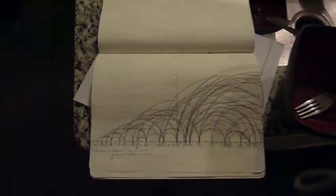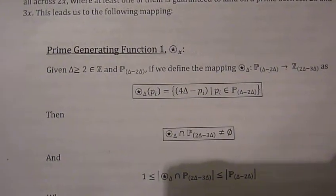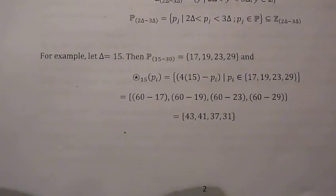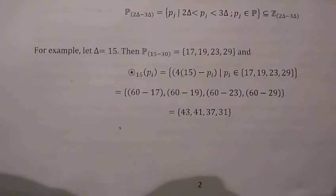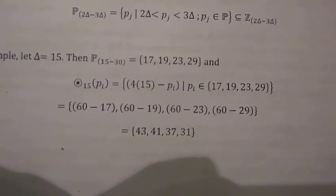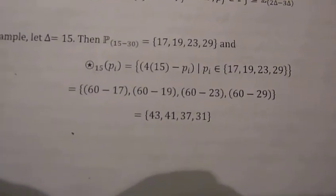The number of new primes that are found increases. I wrote a paper and I'm still working on it. Basically, what it amounts to is I found a prime generative formula: 4x minus the prime. That just reflects it across 2x. Here's another example when x equals 15: the primes between 15 and 30 are 17, 19, 23, and 29. We apply the function and we get 43, 41, 37, and 31. In that example, all of them are prime.